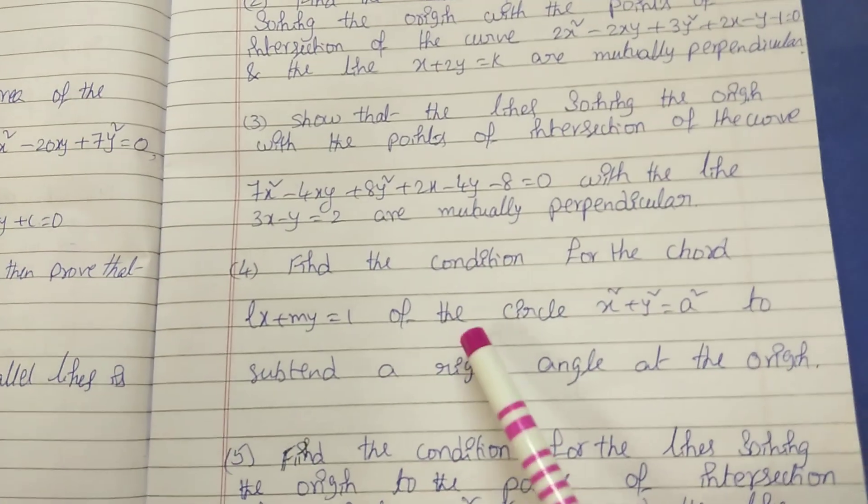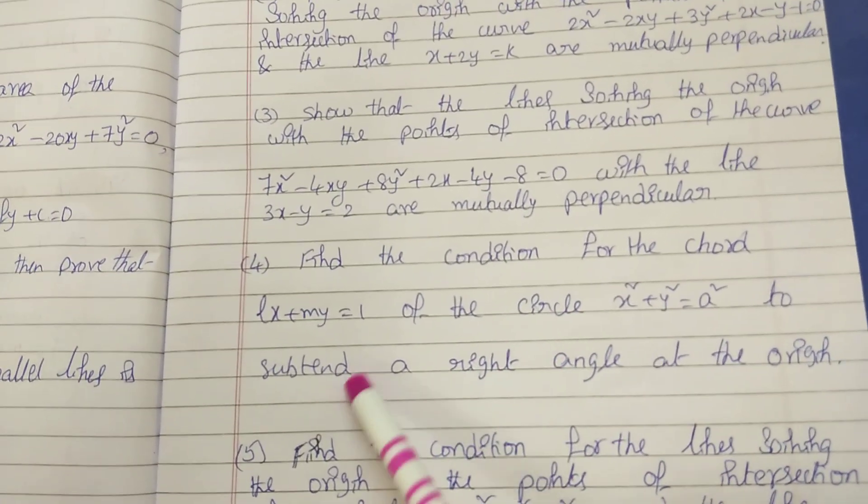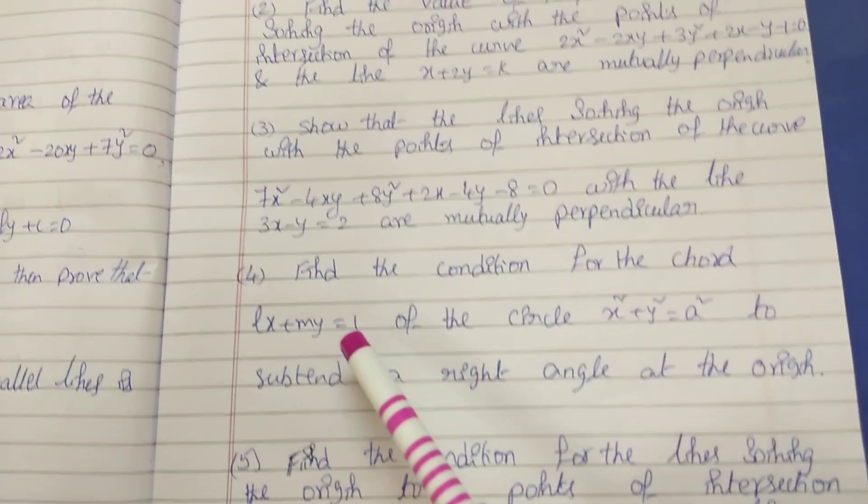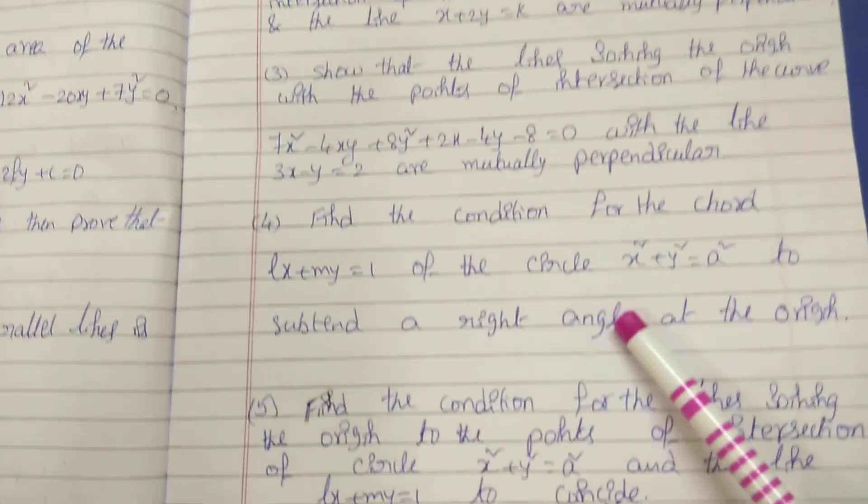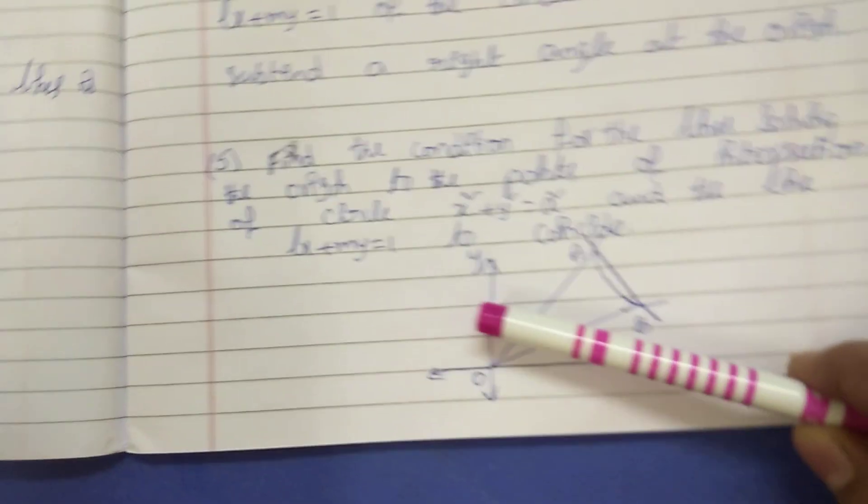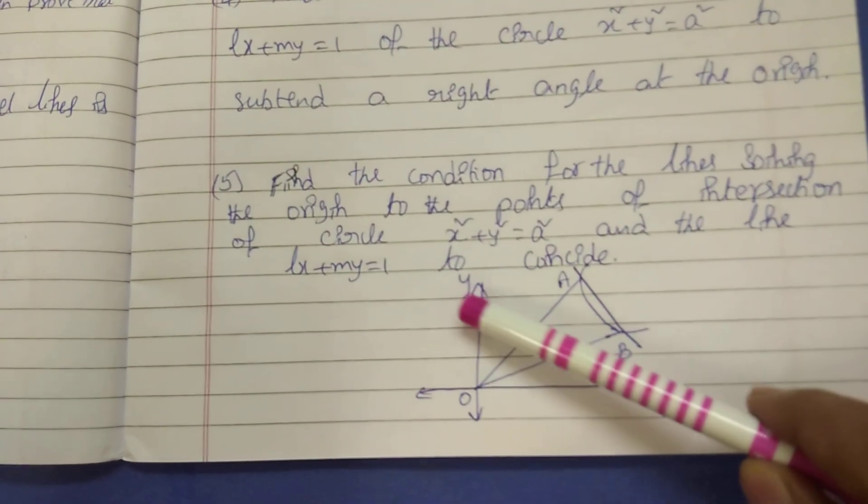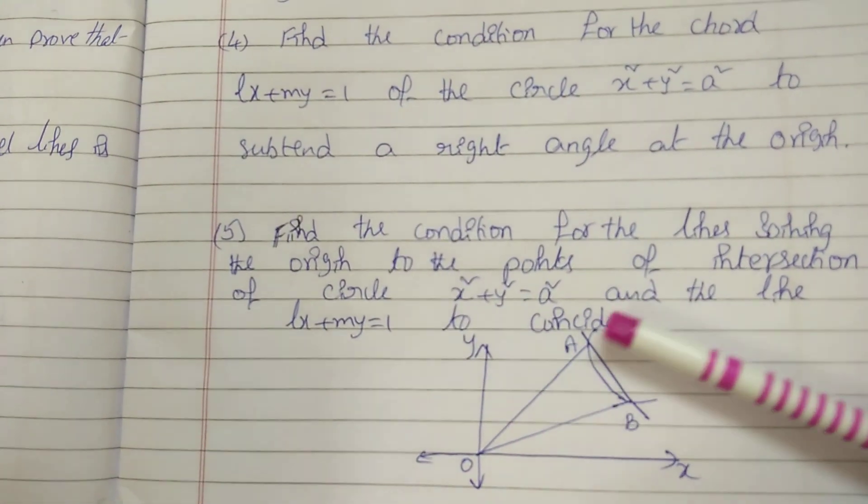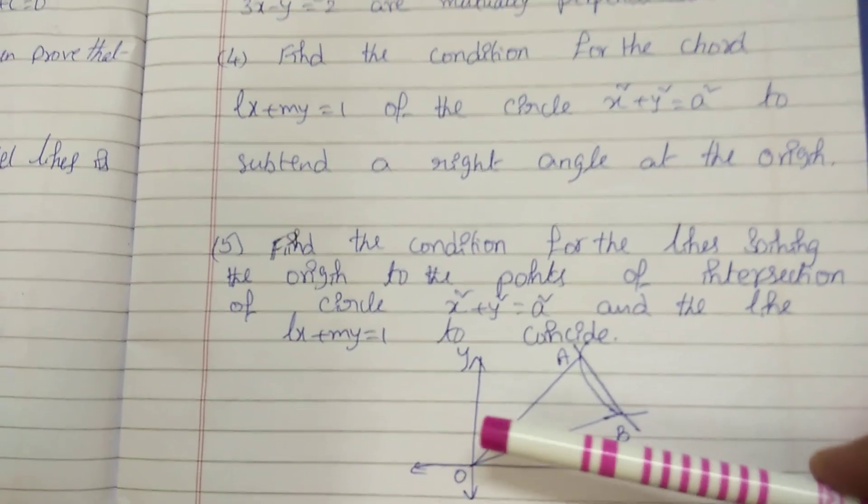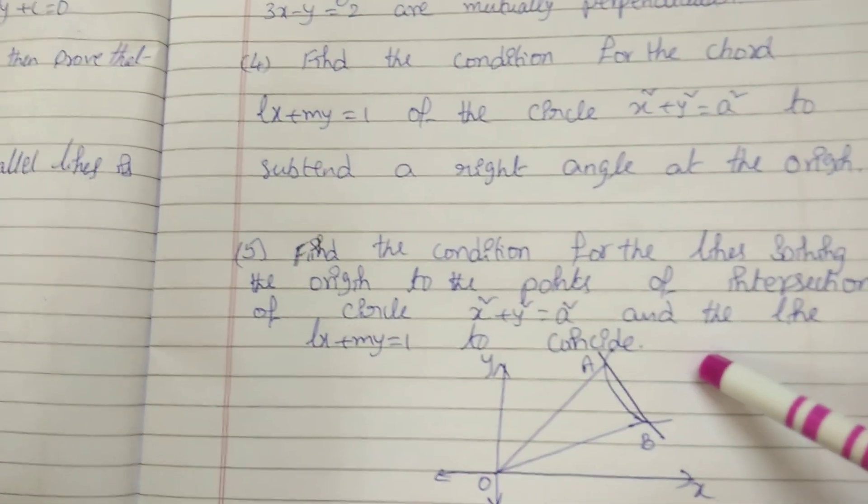Fourth one: condition. How to find condition? Next, circle. If rectangle, what is the condition? Next, locus joining origin, the points of intersection of the circle x square plus y square equal to a square, and the line LX plus MY equal to 1 to coincide. Coincide, this condition h square equal to AB.